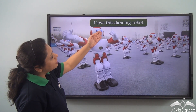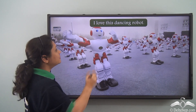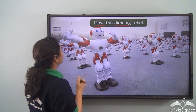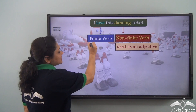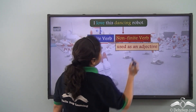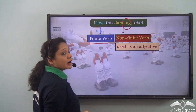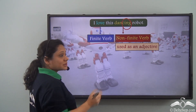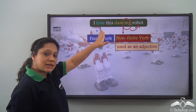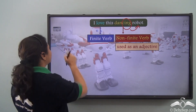I love this dancing robot. In this sentence, 'love' is the finite verb and 'dancing' is the non-finite verb. It is the -ing form of the verb which has been used as an adjective — it is describing the noun 'robot'. Hence in this sentence, 'dancing' is the present participle.